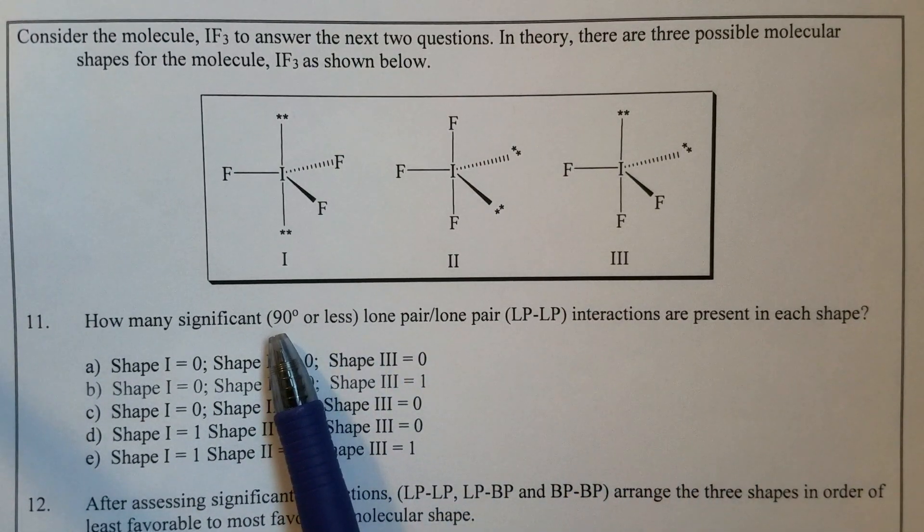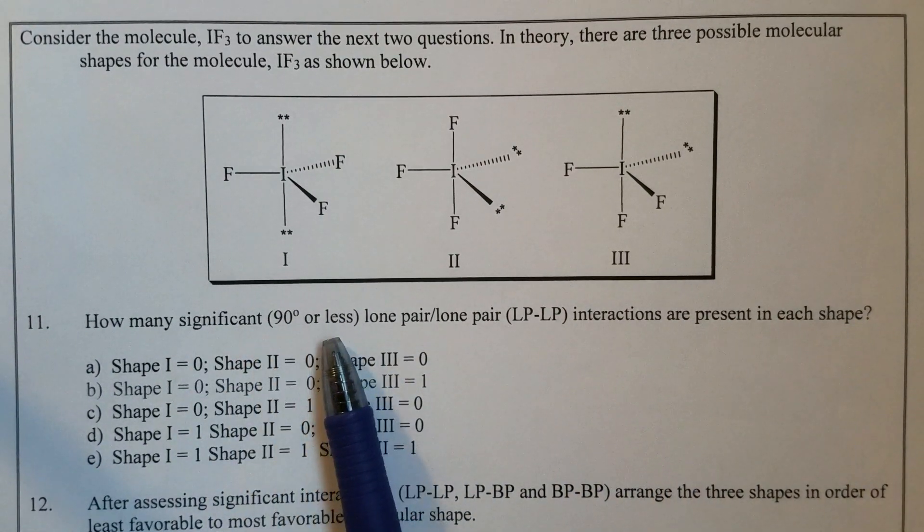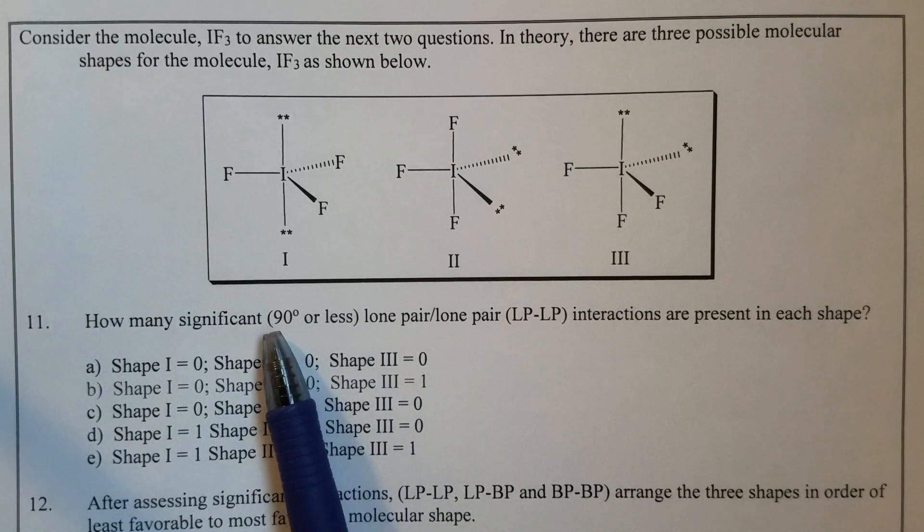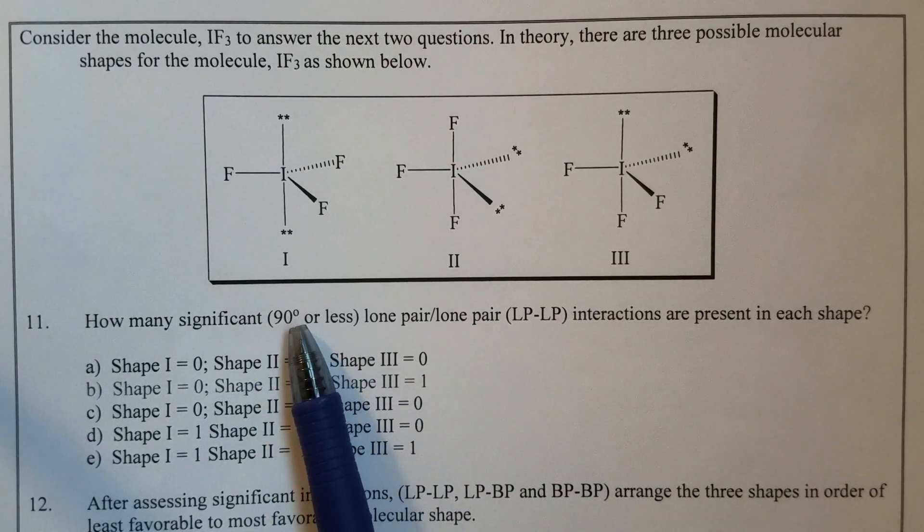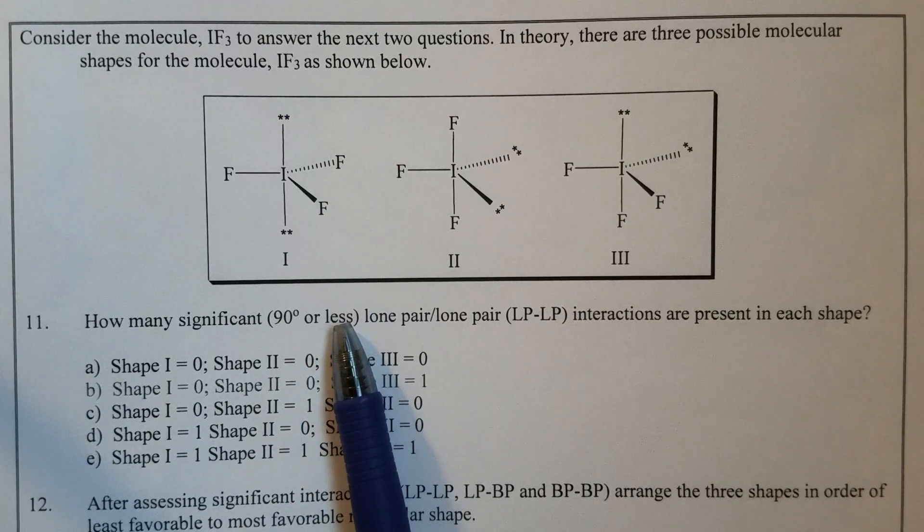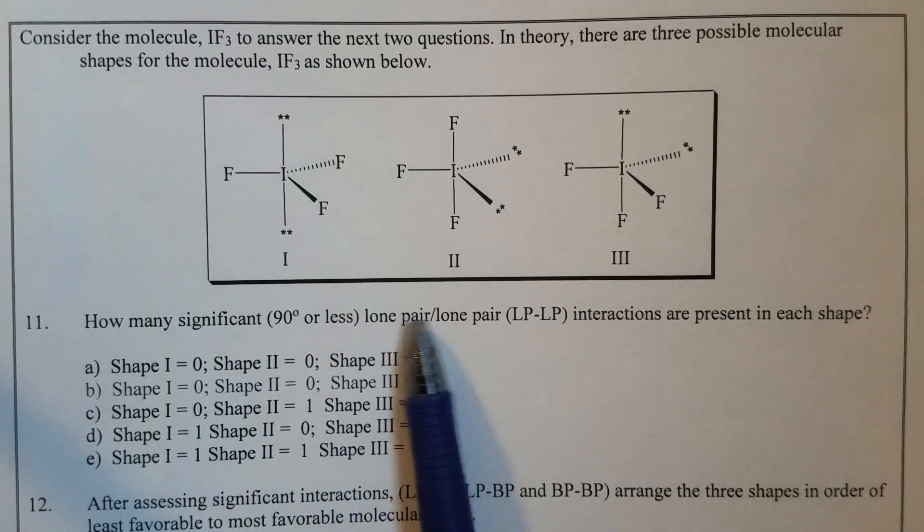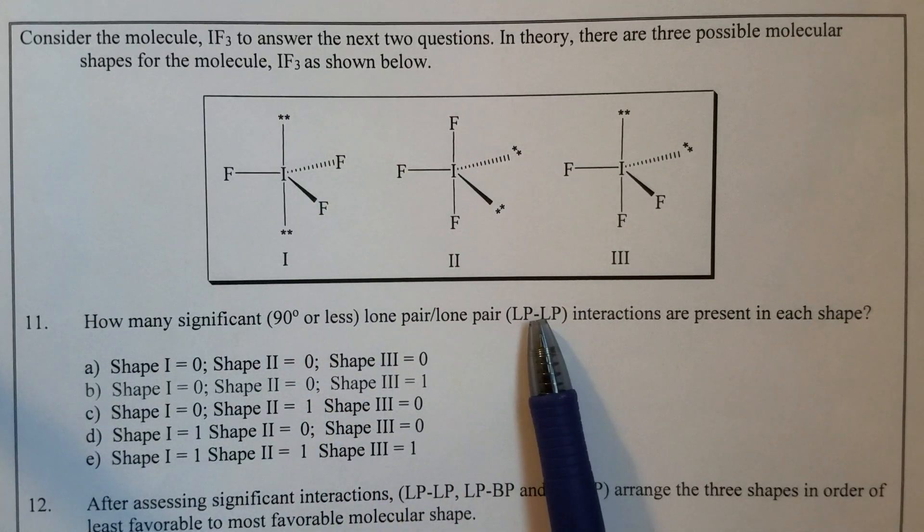So what does significant mean here? How much is significant? It means the angle has to be 90 degrees or less in terms of the lone-pair-lone-pair interaction with each other.